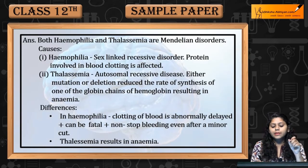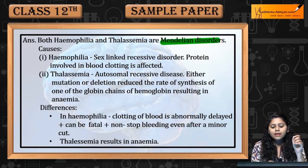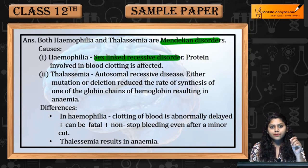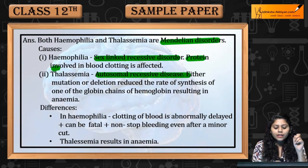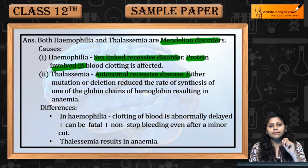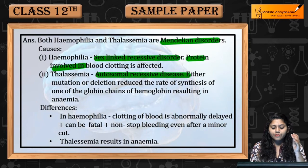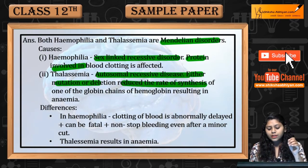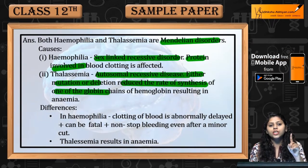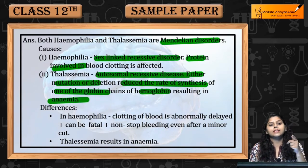Both hemophilia and thalassemia are Mendelian disorders. Hemophilia is a sex-linked recessive disorder, while thalassemia is an autosomal recessive disorder. In hemophilia, the protein involved in blood clotting is affected. In thalassemia, either mutation or deletion reduces the rate of synthesis of one of the globin chains of hemoglobin, resulting in anemia.